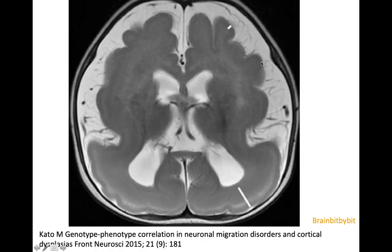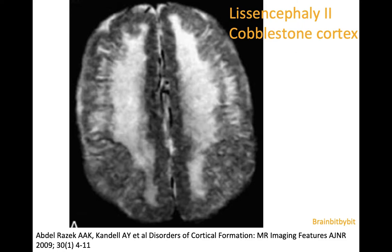If there are some gyri and the cortex seems thick, it's called pachygyria, as in this case. The lissencephaly in the spectrum with band heterotopia is called lissencephaly type 1, which implies there is also a lissencephaly type 2 — and there is. In that case you have a smooth brain with a cobblestone cortex, and it is caused by over-migration of neurons and glial cells.